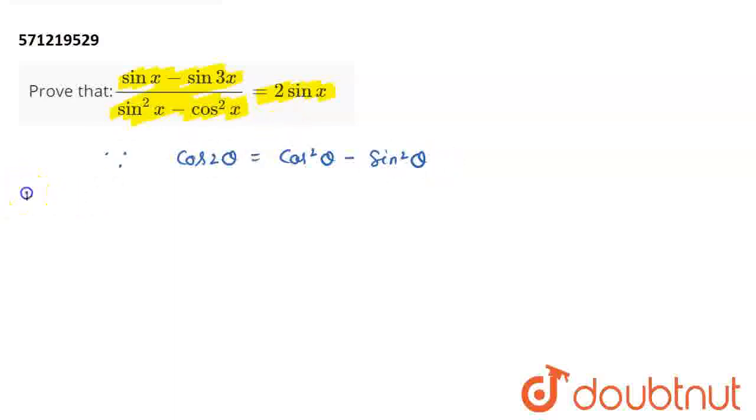So, what I do is I write down my left-hand side and it is sin x minus sin 3x whole divided by sin square x minus cos square x and you multiply the numerator as well as the denominator with minus 1. Why am I doing this? To arrange this particular denominator and simplify it.